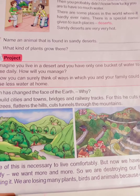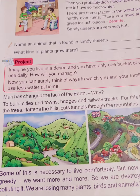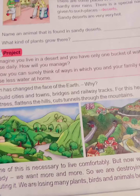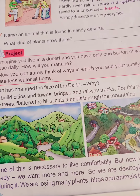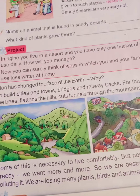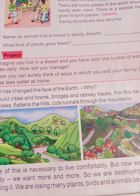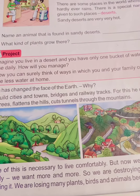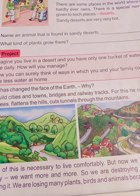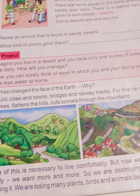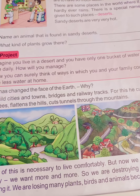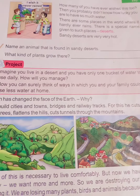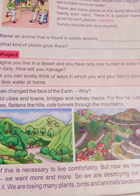Desert people manage all their daily activities with just one bucket of water — why can't we use a small quantity of water too? We should save water for the next generation. It is very difficult to manage with one bucket, but desert people do it because there is no rainfall and they don't even get cool wind. Desert means a hot, dry place with no plants, trees, or rainfall.